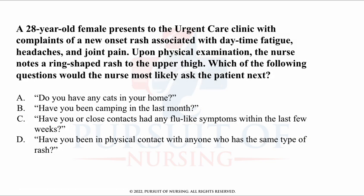This is another classic multiple choice style question that will test your knowledge of physiological integrity. A 28-year-old female patient presents to the urgent care clinic with complaints of a new onset rash associated with daytime fatigue, headaches, and joint pain. Upon physical exam, the nurse notes a ring-shaped rash to the upper thigh. Which of the following questions would the nurse most likely ask next? The options are: Do you have any cats in your home? Have you been camping in the last month? Have you or close contacts had any flu-like symptoms? Have you been in physical contact with anyone who has the same type of rash? Based on that ring-shaped rash, which of these questions do you think the nurse would ask next?